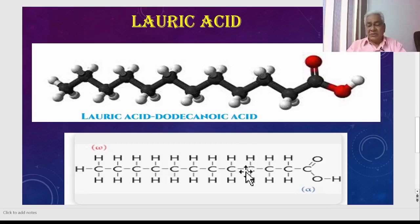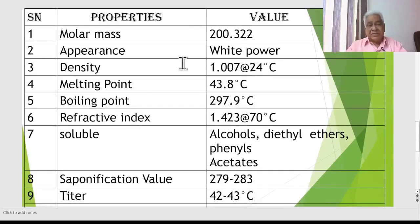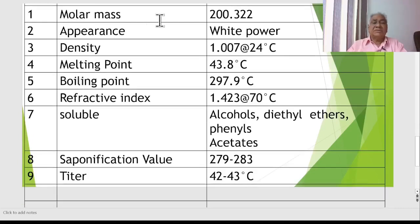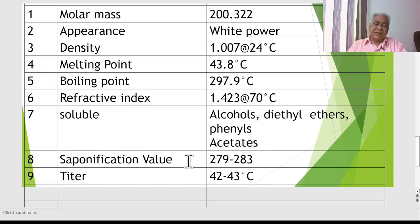This chart covers the physical properties of Lauric Acid — only the most relevant properties are listed here. The molar mass is 200.322 g/mol. Its appearance is a white powder. Its density is 1.0078 at 24 degrees Celsius. The melting point is 33.8 degrees Celsius and the boiling point is 297.9 degrees Celsius. The refractive index is 1.423 at 70 degrees Celsius. This fatty acid is soluble in alcohols, diethyl ether, phenols, and acetates. The saponification value is 279 to 283, and the iodine value is 42 to 43.